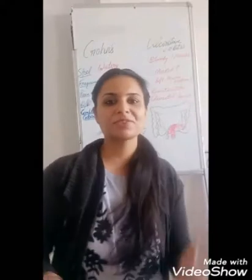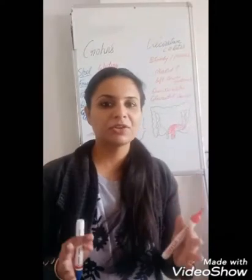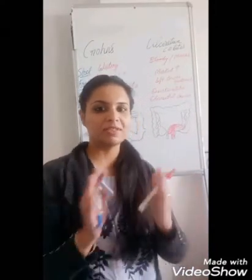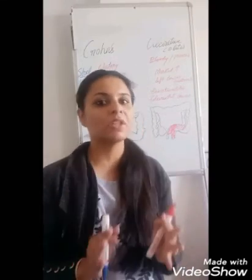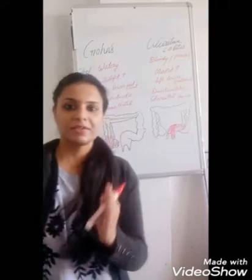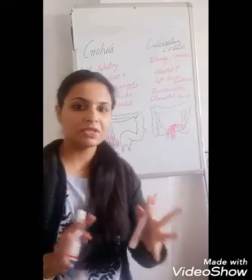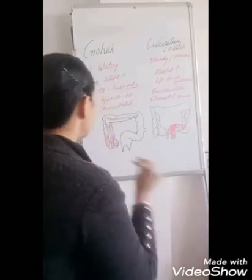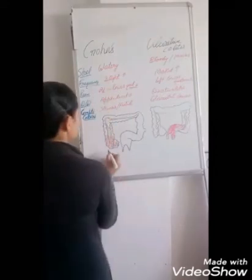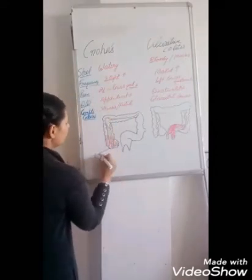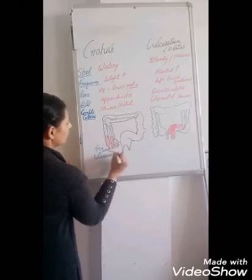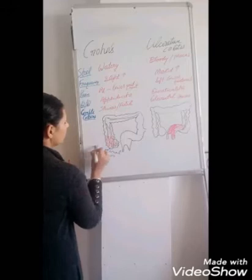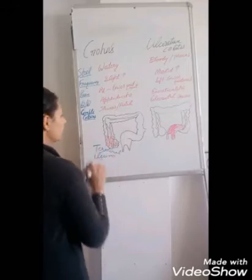Hello viewers and my dear students. I would like to differentiate the two diseases: ulcerative colitis and Crohn's disease. Both are inflammatory bowel diseases where inflammation and ulceration occur. In Crohn's disease, there is involvement of the terminal ileum first.